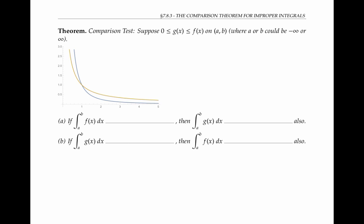So in the picture, we'll call this blue function g of x, and the orange function f of x. And let's consider the interval from one to infinity, where g of x is less than f of x, and both of them are bigger than zero.